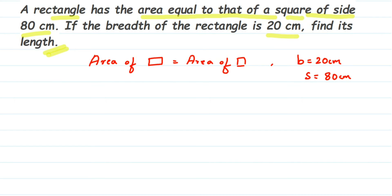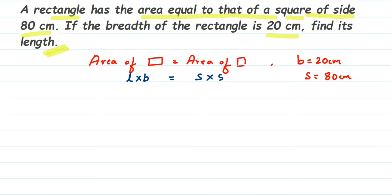To start and solve this, we have to find out the length. We are going to use the fact that area of rectangle is same as area of square. Area of rectangle is length into breadth, so we write: length into breadth is equal to side into side. Using that equation, we are going to find out the length.